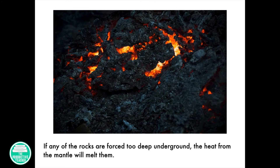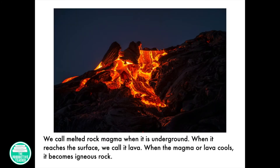If any of the rocks are forced too deep underground, the heat from the mantle will melt them. We call melted rock magma when it is underground. When it reaches the surface, we call it lava. When the magma or lava cools, it becomes igneous rock.